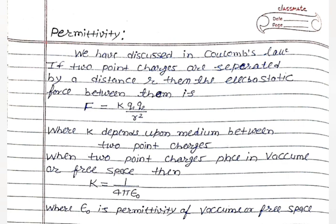We have discussed in Coulomb's law that if two point charges are separated by a distance r, then the electrostatic force between them is given by F equals k q1 q2 by r squared. Here, k depends upon the medium between the two point charges.